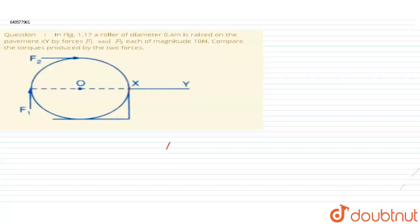Hello students, the question is: in figure 1.17, a roller of diameter 0.4 meter is raised on a pavement XY by forces F1 and F2, each of magnitude 10 newton. Compare the torque produced by the two forces.